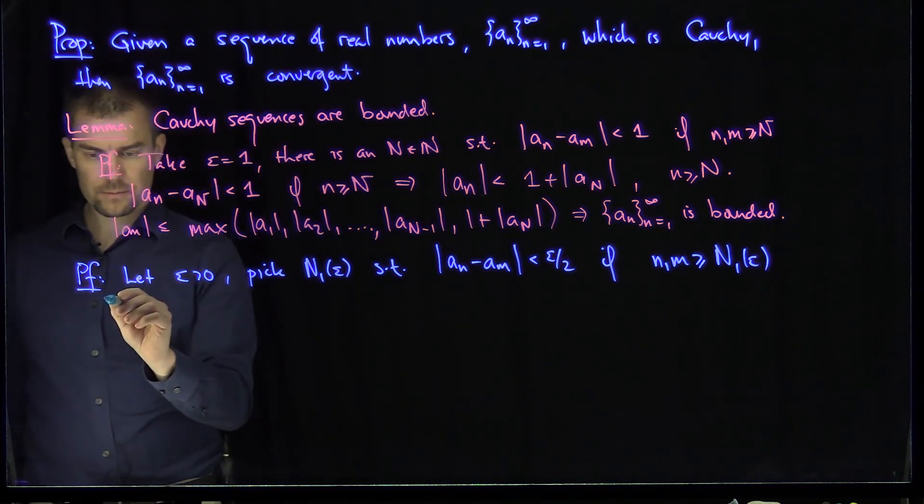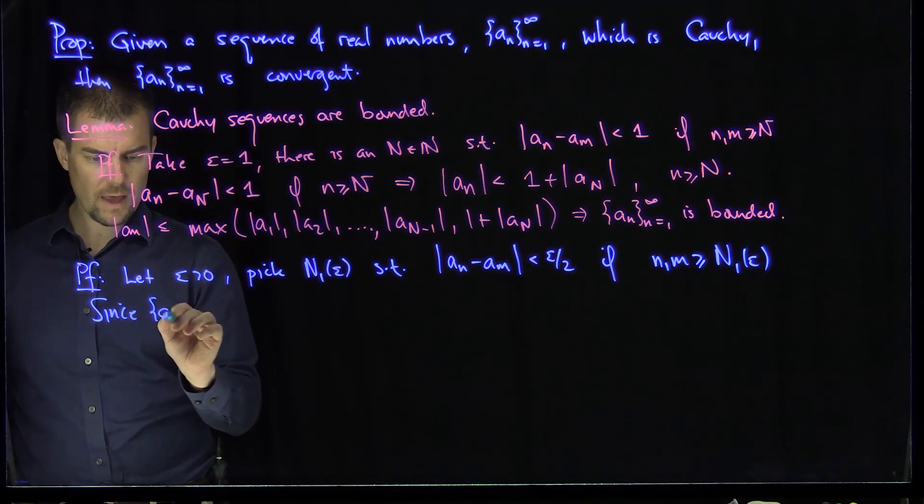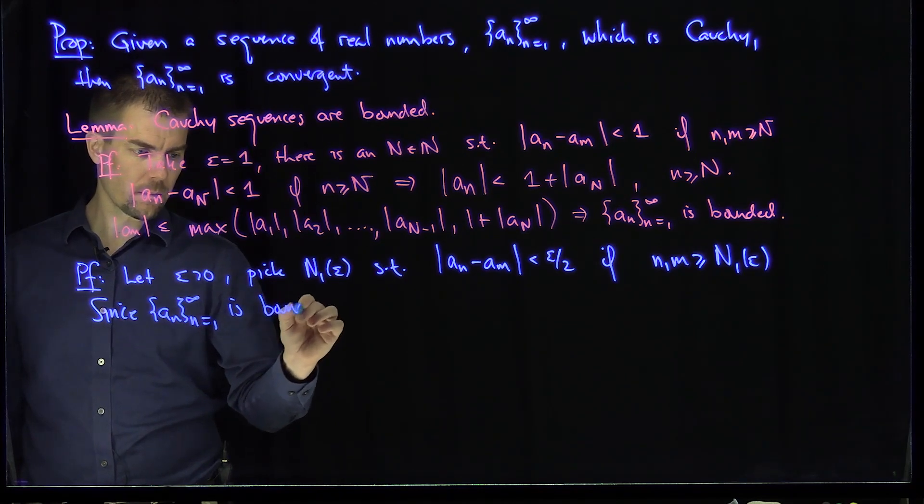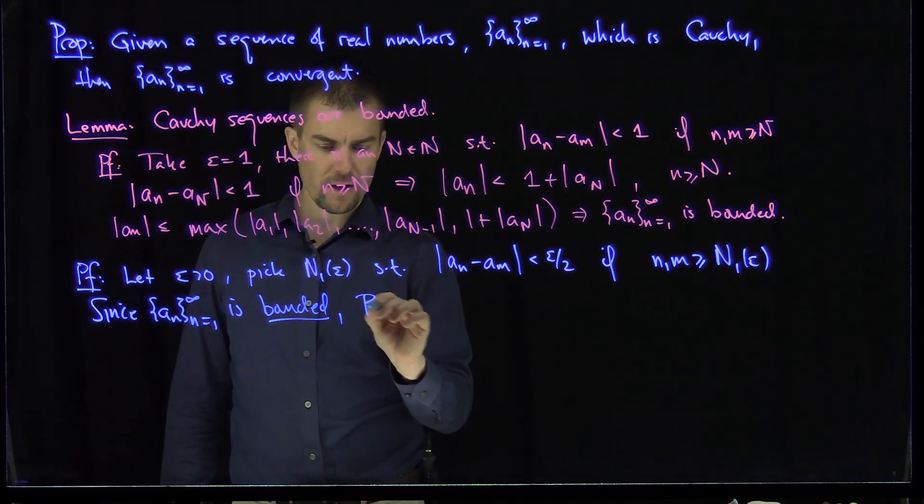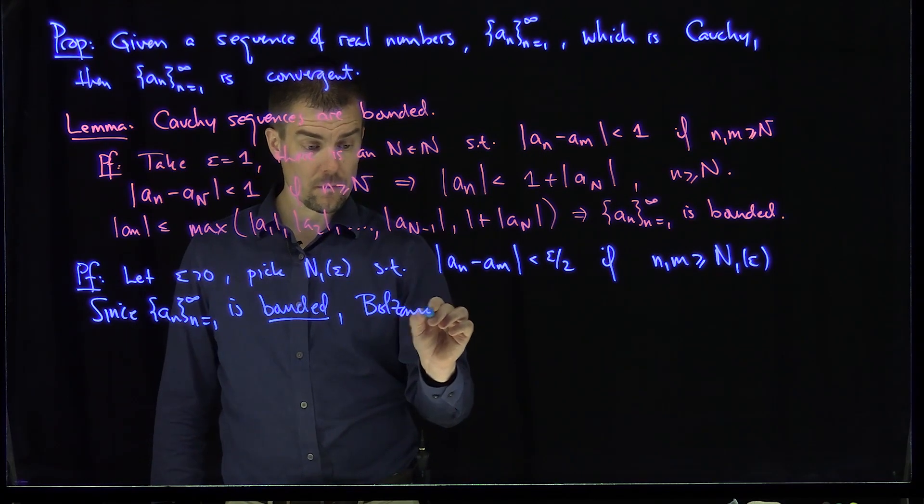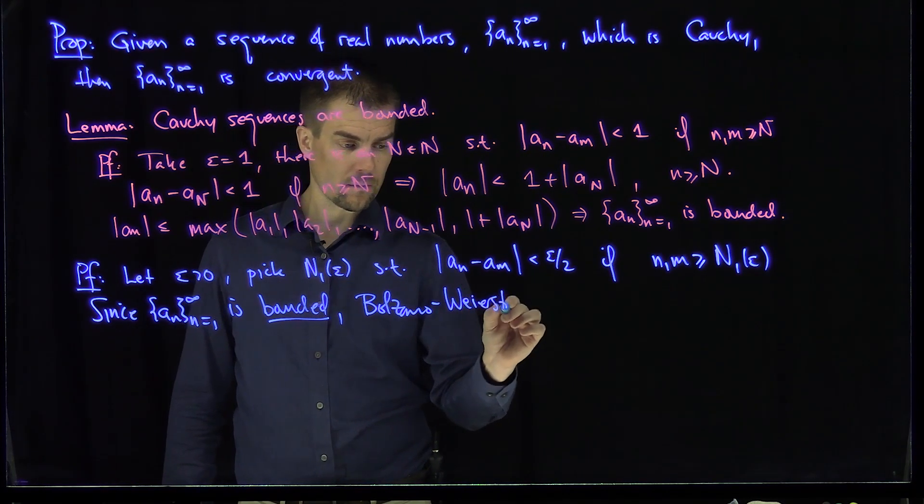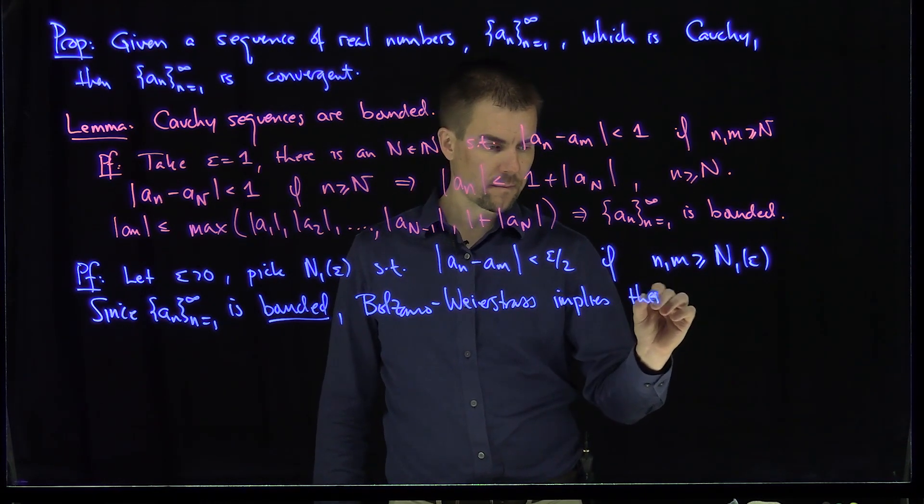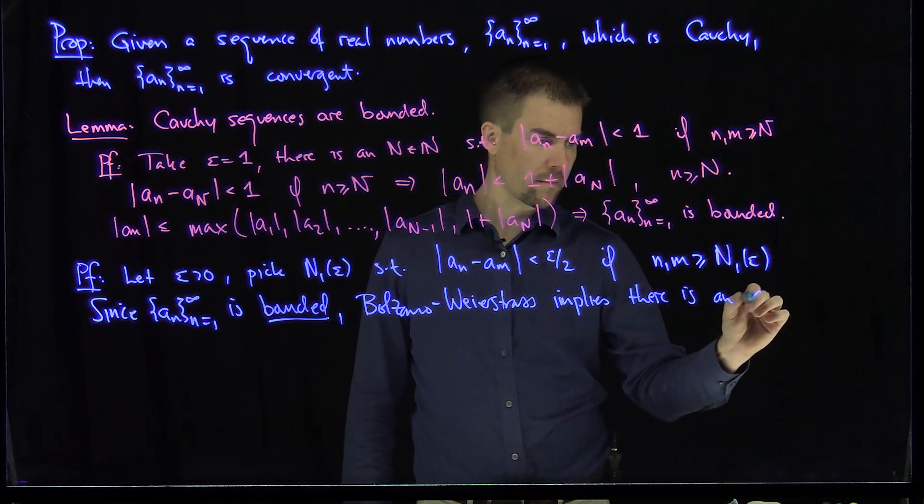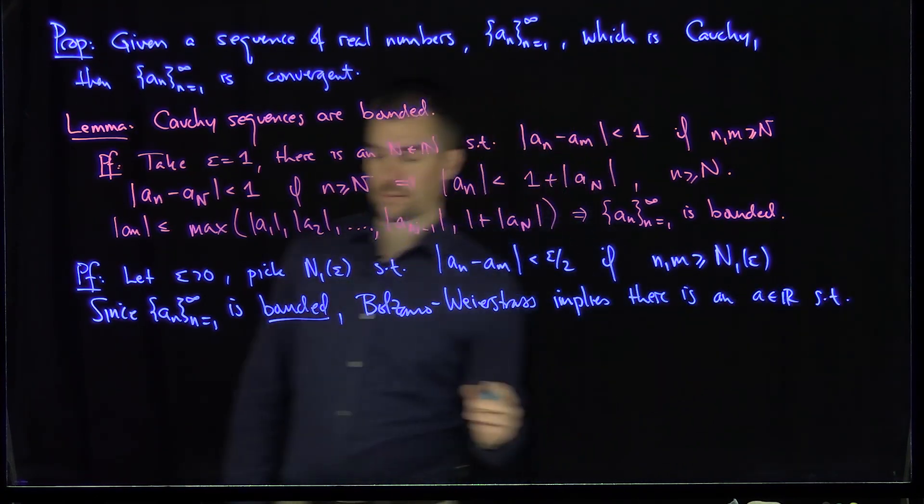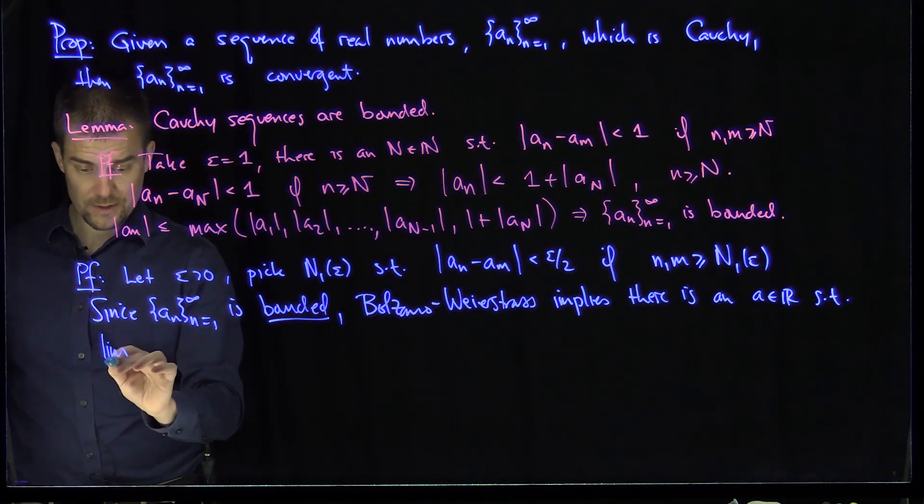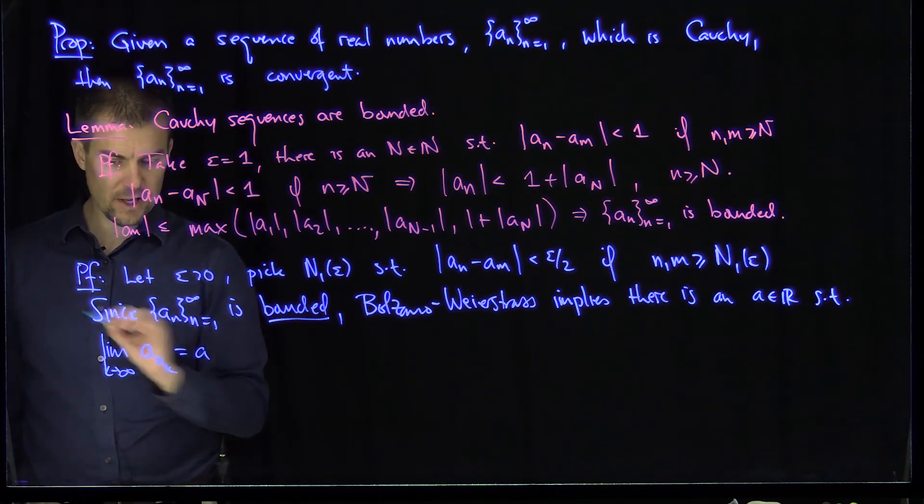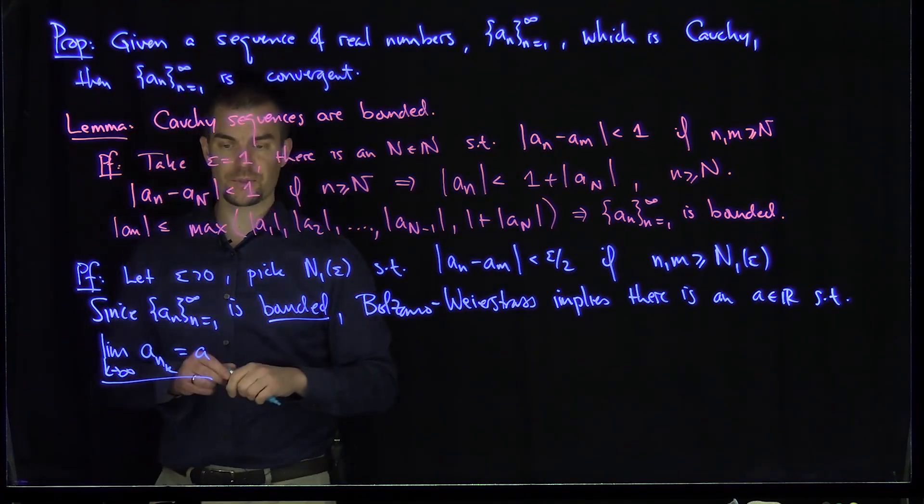Okay. Now, since a_n is bounded, Bolzano-Weierstrass implies that there is an a such that the limit as k goes to infinity of some subsequence a_{n_k} is equal to a. So there is a convergent subsequence by Bolzano-Weierstrass.